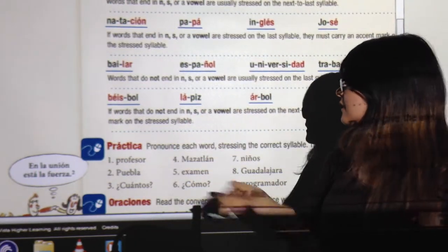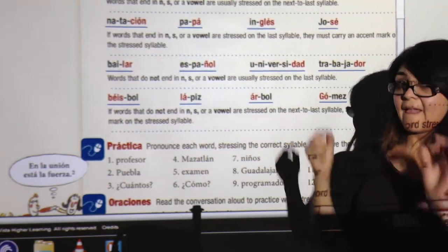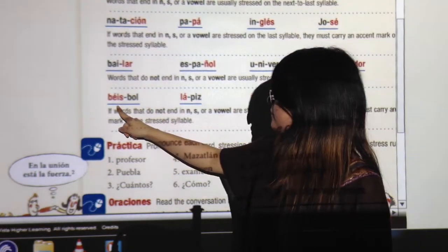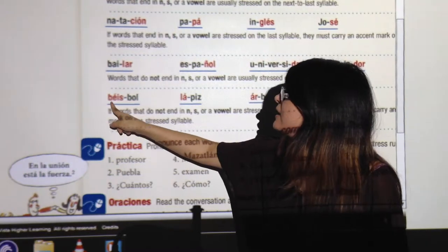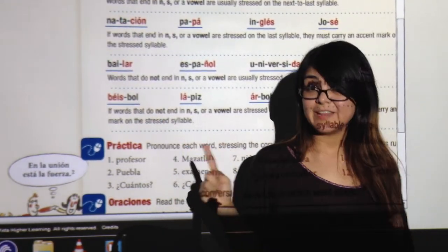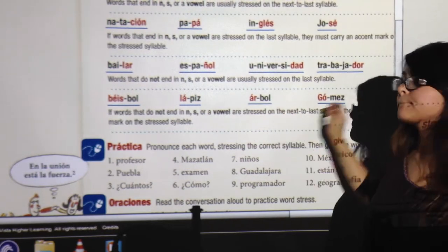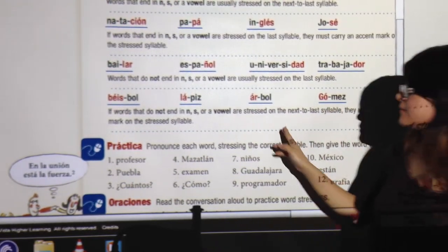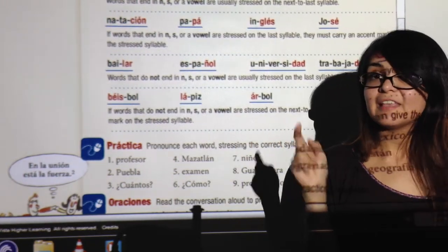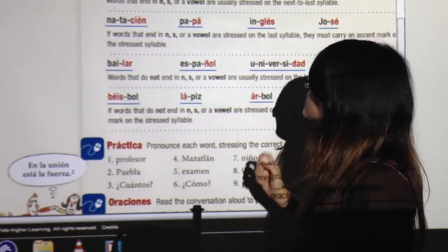And last of these little rules. If words that do not end in N, S, or a vowel are stressed in the next to last syllable, you'll need an accent. All right? So béisbol. The strong one is in the next to last and is not ending in N, S, or a vowel. So we need a written accent. Repeat. Lápiz. Good. Árbol. Gómez. You see? Oh, and this is really important for you to remember. Zeta is not ese. So it doesn't count. You need an accent in here because it's not N, S, or a vowel. All right? So that's pretty much it.